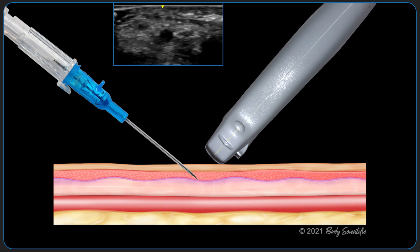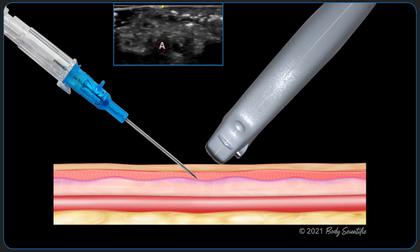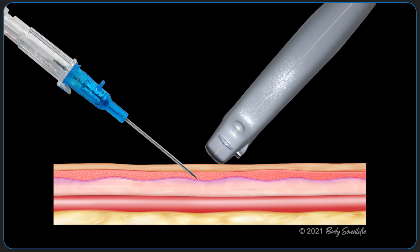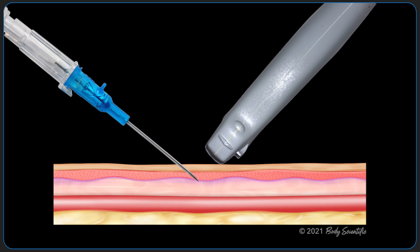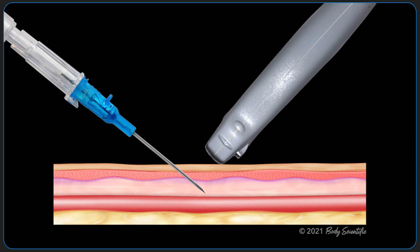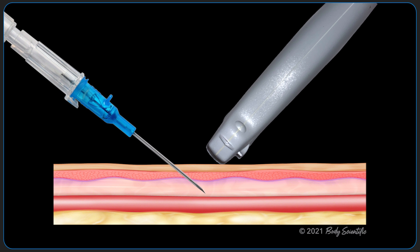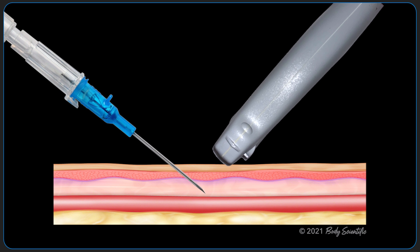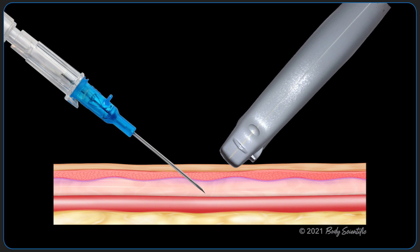In the ultrasound image seen here, the bevel is seen off center from the vessel and adjustments of the angiocath are therefore necessary. As the needle is advanced, the ultrasound transducer is translated at a similar angle to continue to visualize the bevel.